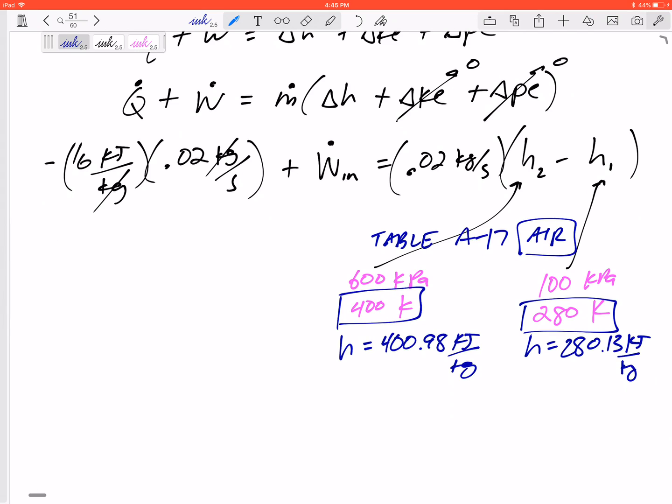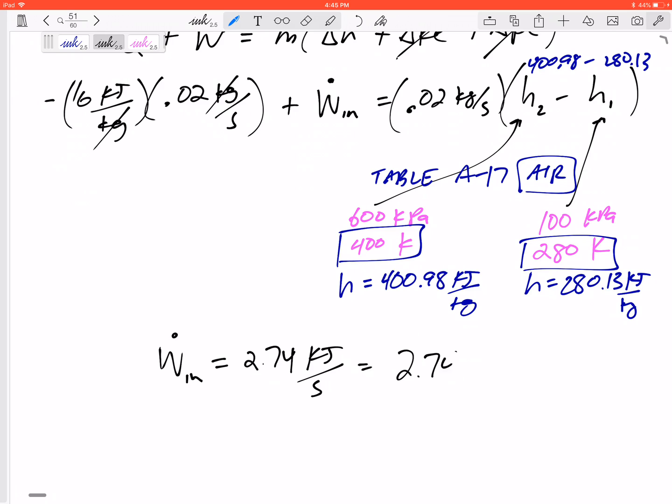So then subtract that: 400.98 minus 280.13 times 0.02. Add this to the other side. A little bit of math gives W in equals 2.74 kilojoules per second, which is 2.74 kilowatts.